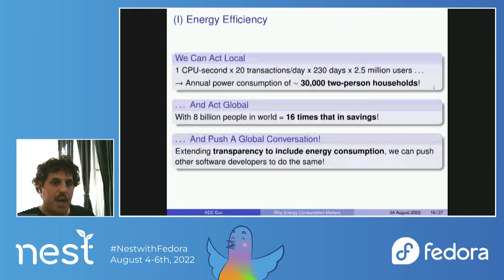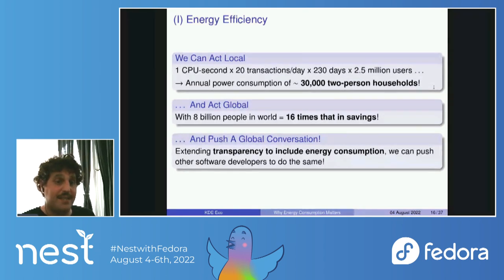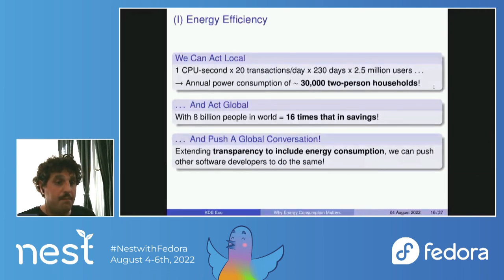With software, you can act local and act global. That back-of-the-envelope calculation went from one CPU second to the annual power consumption of 30,000 two-person households — and that was just for the EU. Multiply by 16 for global scale, and we're talking about roughly the annual power consumption of a city like Liverpool. By making energy consumption transparent, we can push other software developers and companies to do the same.